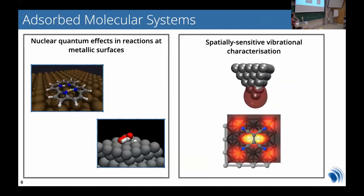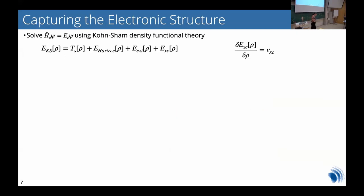I'll give two showcase examples: nuclear quantum effects in reactions on metallic surfaces, and spatially sensitive vibrational characterization of molecules on surfaces. Before giving the applications, I'll introduce the theory. For the electronic structure, we use density functional theory. This is the energy functional, where rho is my electronic density, and these are the several terms including the kinetic energy, the electron-nuclear interaction, and the very famous exchange-correlation energy, which defines the exchange-correlation potential.